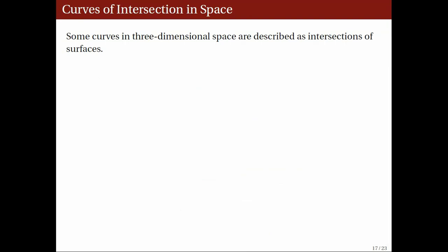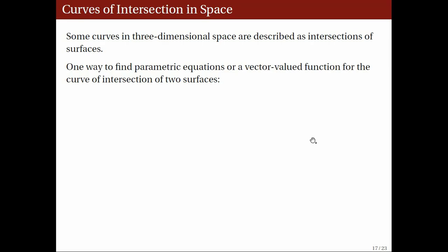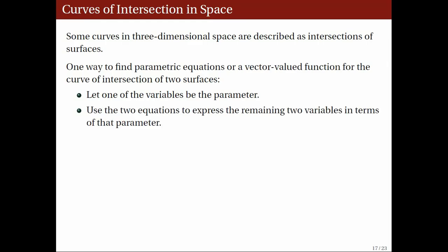Given that a curve is the intersection of some surfaces, we can find a vector function for it as follows: if, from the given equations of the surfaces, two of the three variables can be written as functions of the third, we let that independent variable be the parameter. Then, using the given surface equations, we solve for the other variables in terms of that parameter.